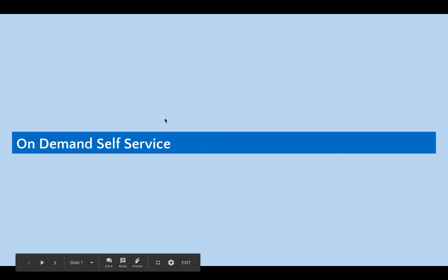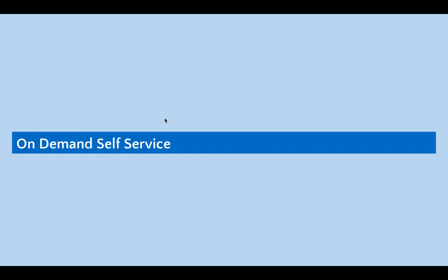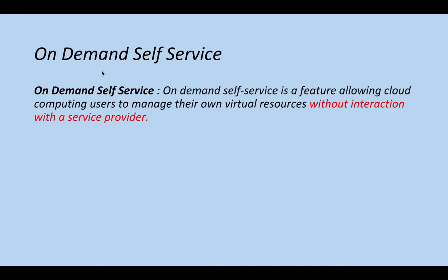In this lecture we'll study the first characteristic of cloud computing, which is on-demand self-service. This is the first of the five characteristics we had seen in the previous lecture. On-demand self-service — if you pay attention to the name — it is a kind of service which you can provision yourself, whenever there is a requirement or demand, without anybody's interaction.